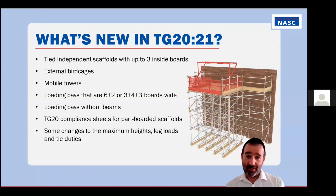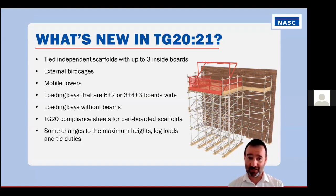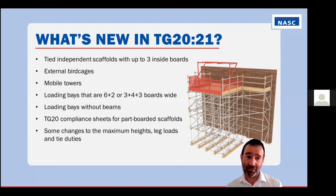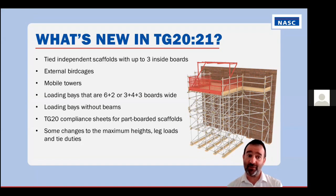As for what's new in TG2021: we've extended the range of TG20 compliant scaffolds to cover more typical cases. We now have TG20 compliant sheets for tied independent scaffolds with up to three inside boards. We also now have compliant sheets for external birdcages — in TG20:13, only internal birdcages were compliant. We've also added definitions for typical tube and fitting mobile towers.